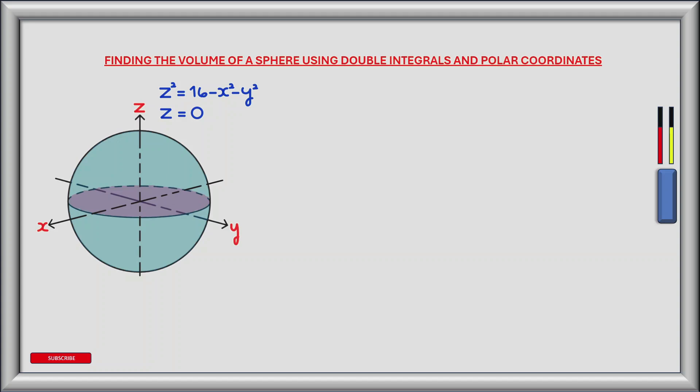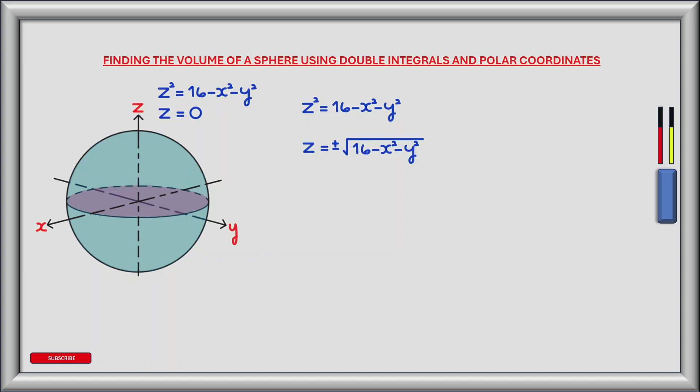Our first step in calculating the volume enclosed between the two surfaces is to determine the region of intersection between the x-y plane and the upper hemisphere, and then to convert this region to polar coordinates. To find this region we need to equate one equation to the other. The equation of the sphere is z squared equals 16 minus x squared minus y squared, so z equals plus or minus the square root of 16 minus x squared minus y squared. Taking the positive square root gives the equation of the upper hemisphere.